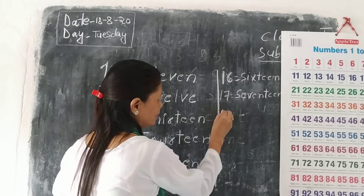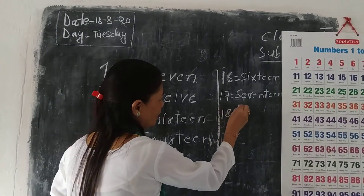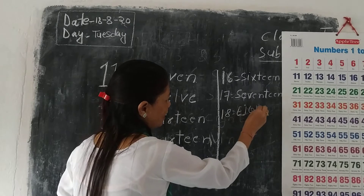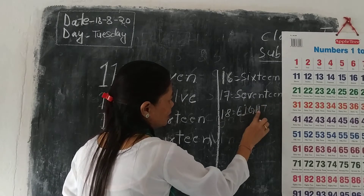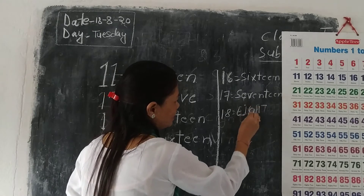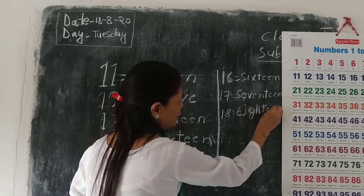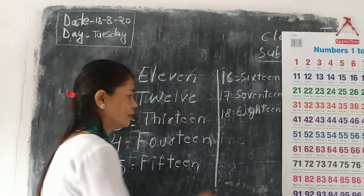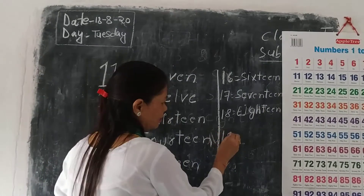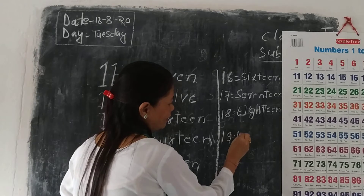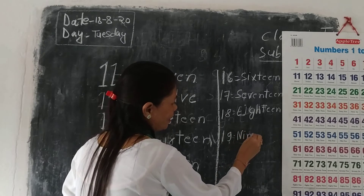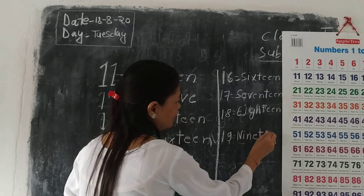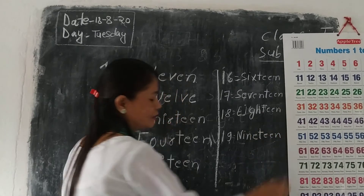And 18 — E-I-G-H-T-E-E-N. 18. And 19 — N-I-N-E-T-E-E-N. 19.